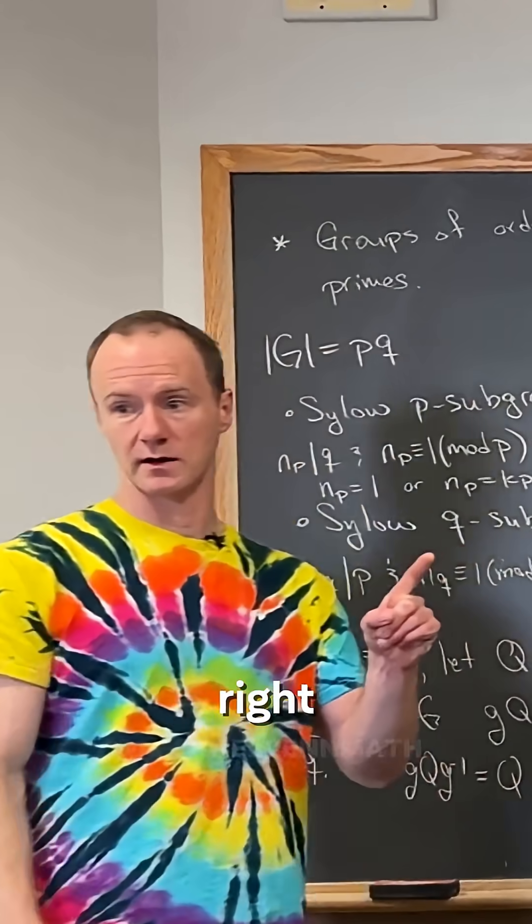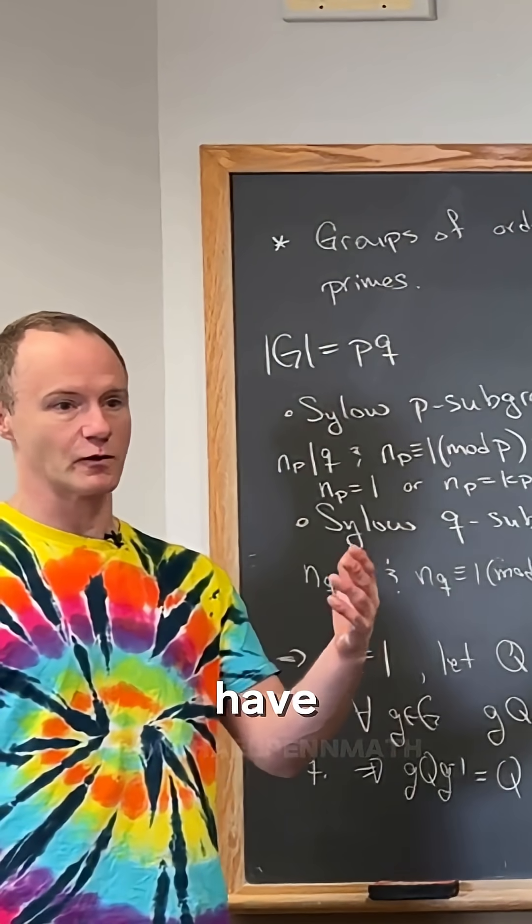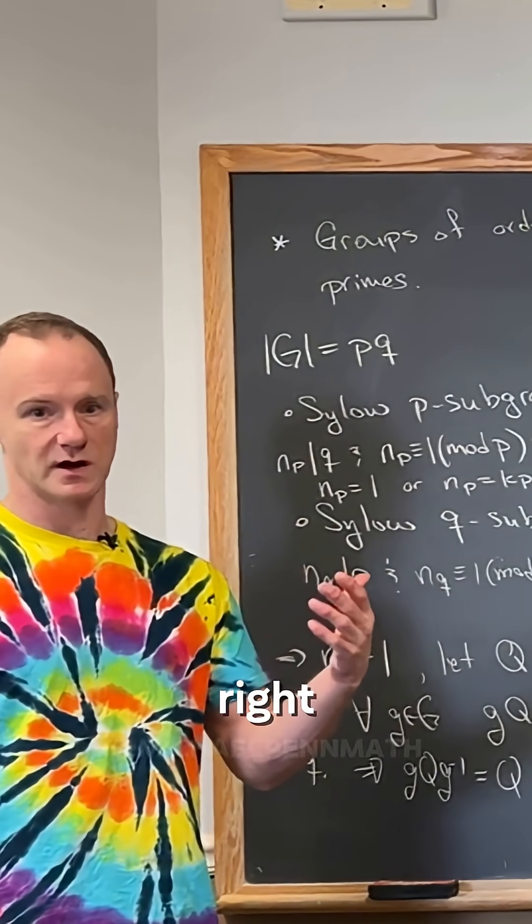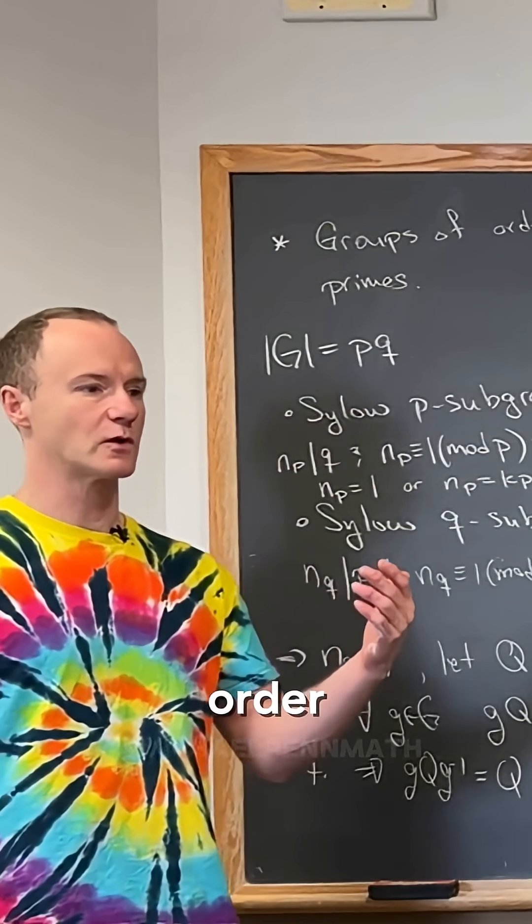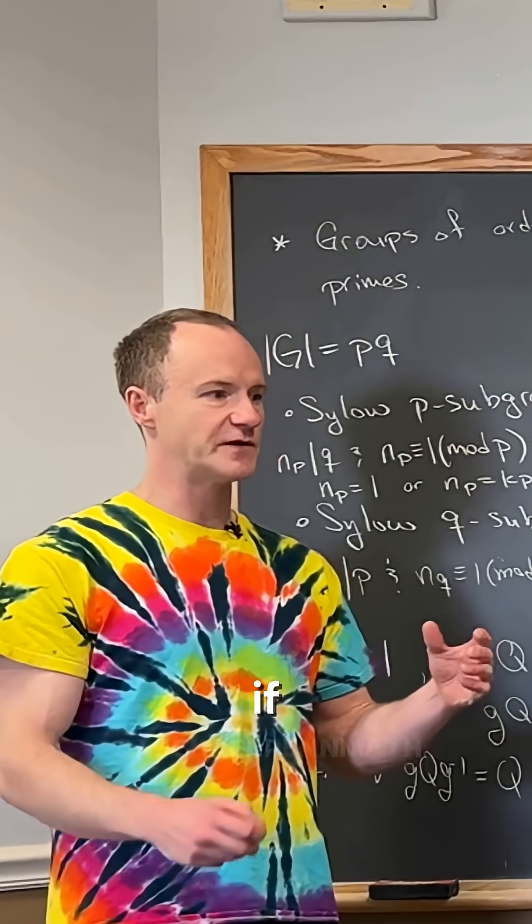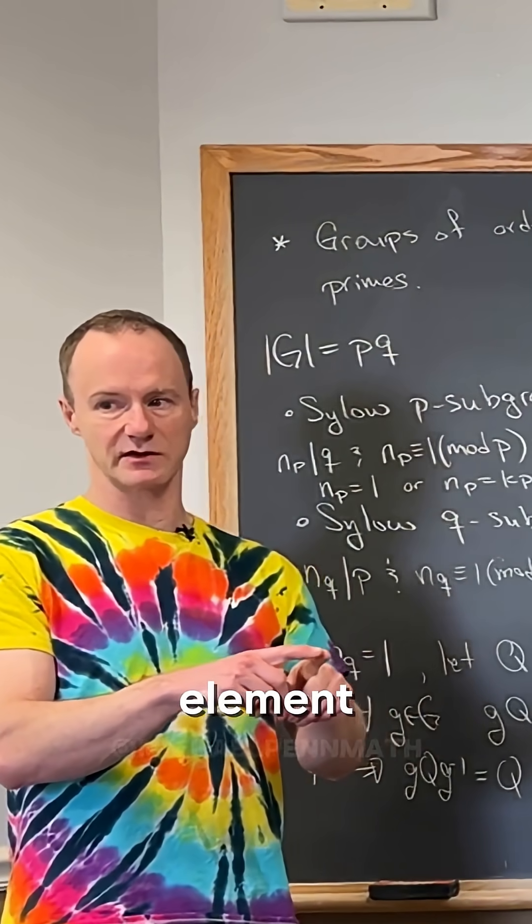Because P intersect Q has to be one, right? Because look, all of the non-identity elements of P have order p because it's prime. All the non-identity elements of Q have order q because it's prime. So if it's in both, then the only thing that's possible is for it to be the identity element.